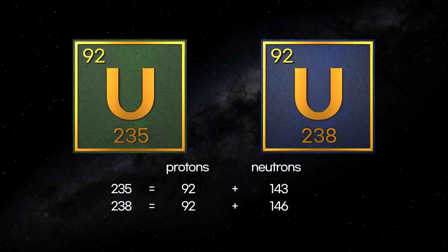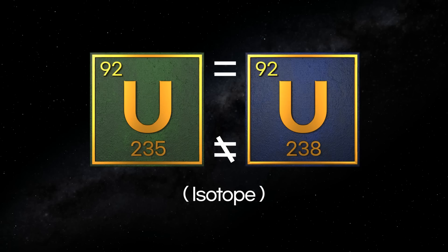Uranium-235 has 92 protons and 143 neutrons, while uranium-238 has the same number of protons at 92 but 146 neutrons. Elements that have the same number of protons but different number of neutrons, just like the case above, are called isotopes.